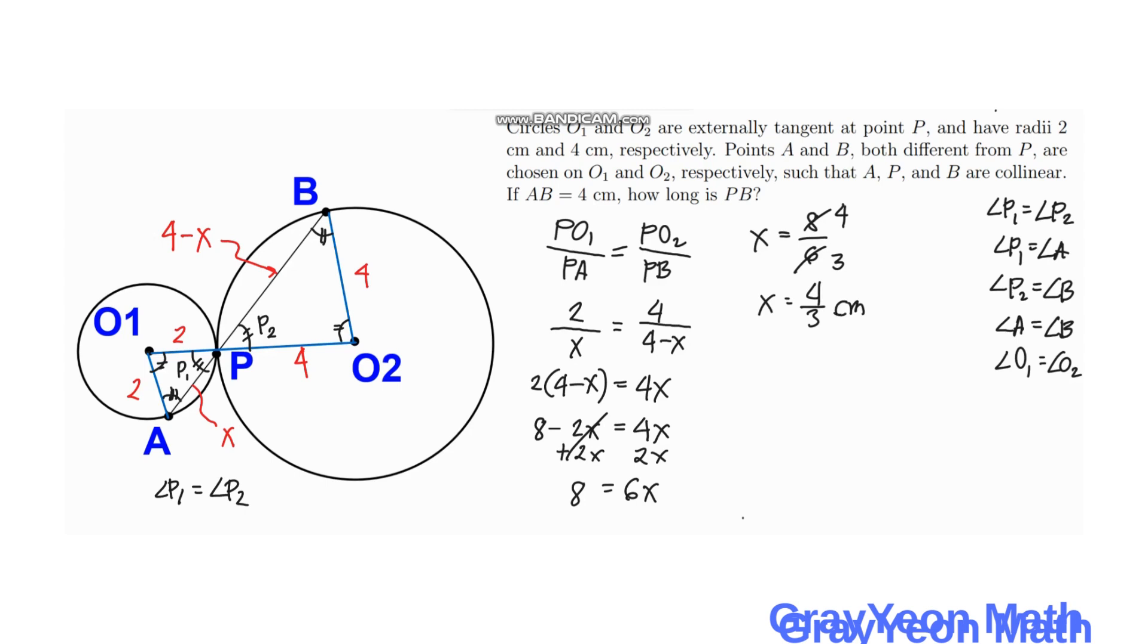Actually this X is not what we are looking for, we are actually looking for PB, which is equal to 4 minus X. So PB is actually equal to 4 minus 4 thirds. So PB equals 3 divided by 1 is equal to 3, times 4 is equal to 12, minus 3 divided by 3 is equal to 1, times 4 which is 4. So PB is equal to 8 over 3 cm.